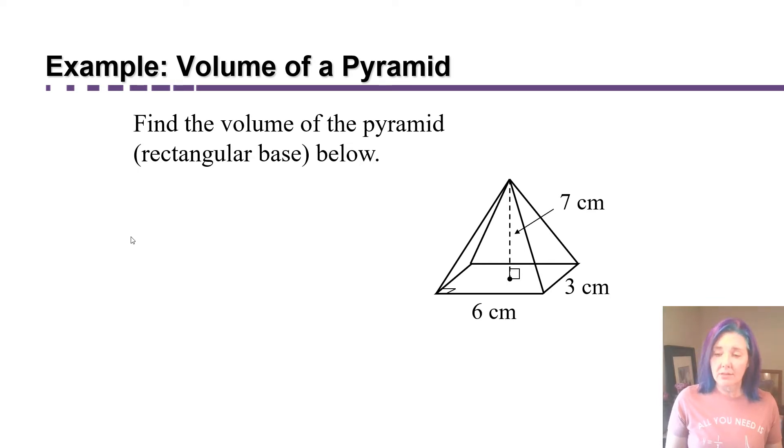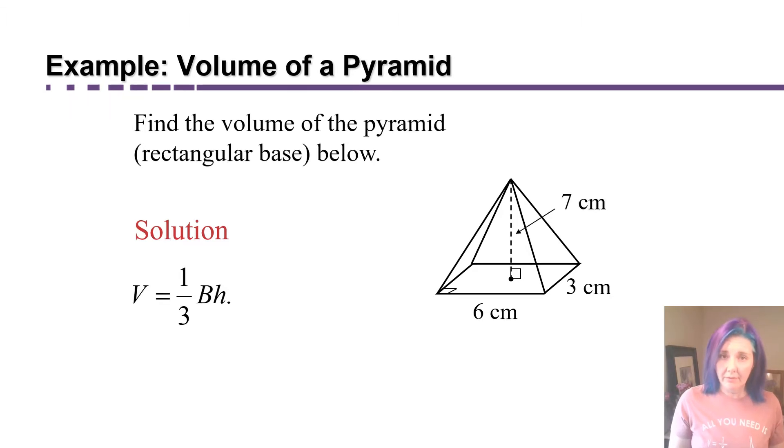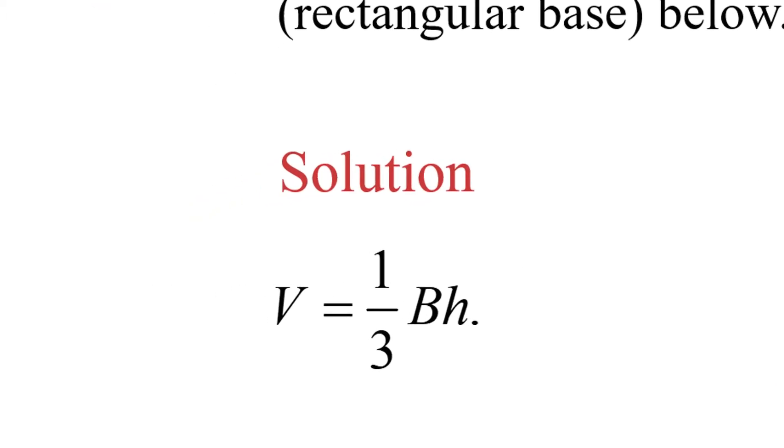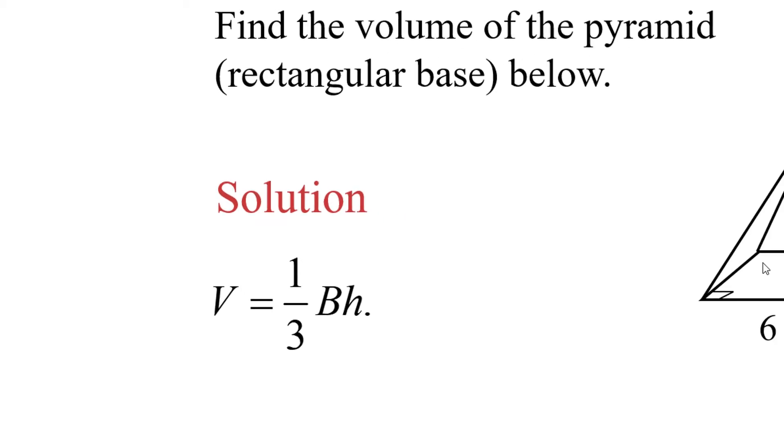The dimensions of the base are six centimeters by three centimeters, and the height is seven centimeters. We're going to use the formula for the volume of a pyramid. Volume equals one-third capital B times H, and what capital B is referring to is the area of the base.